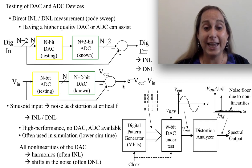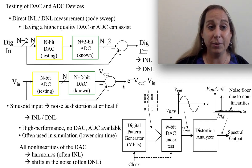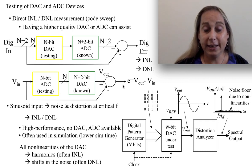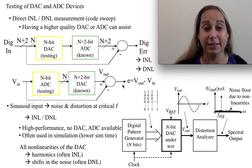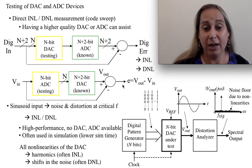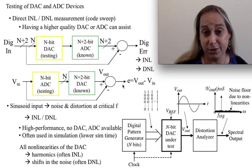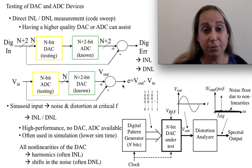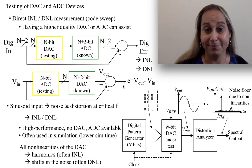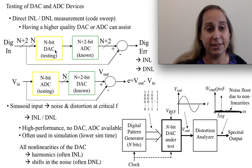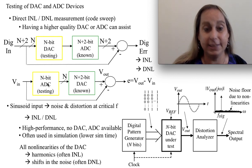An interesting question comes up when you want to ask: how do I take an ADC or DAC and test it experimentally? This really comes up in practice because people want to know how to simulate such a structure. When we look at these things, we have to ask some questions — how would I do that? Usually the case is I want to either test an N-bit DAC or an N-bit ADC.